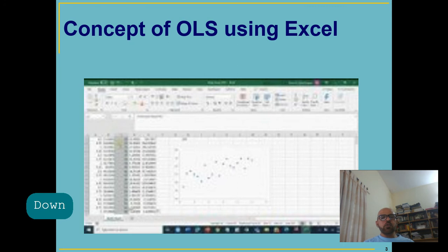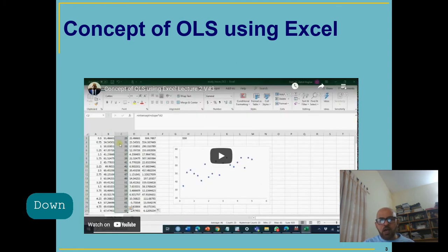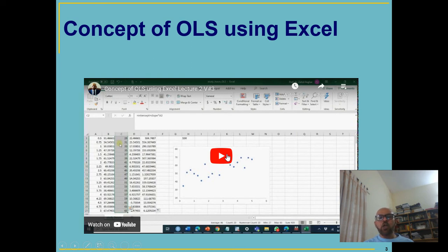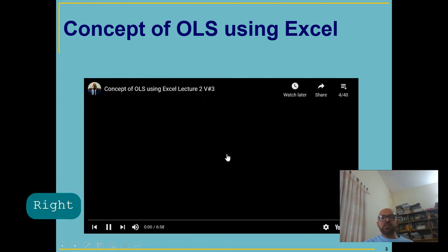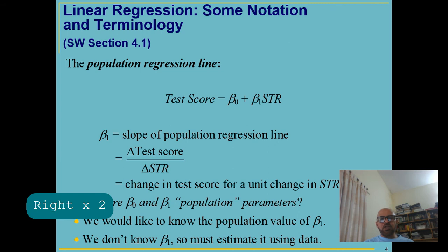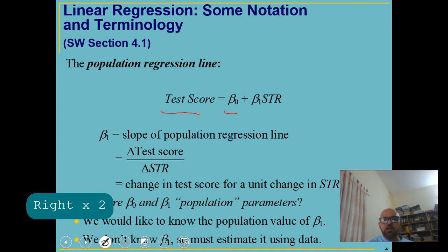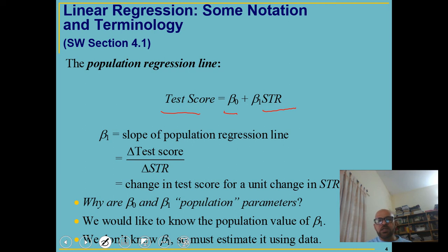In chapter 6 we'll discuss multiple linear regression. If you want more on the concept of OLS estimators, you can watch a separate video on what we mean by OLS and how it makes the sum of squares of residuals minimum. Our population regression function is simply: test score equals beta 0 plus beta 1 times student-teacher ratio, where beta 1 is the slope coefficient.